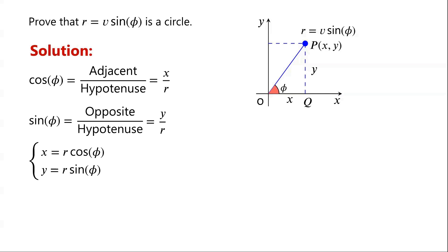As r equals v·sin(φ), so x equals v·sin(φ)·cos(φ), and y equals v·sin²(φ).